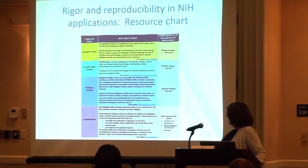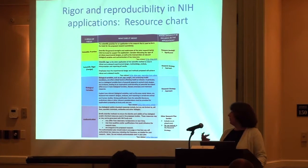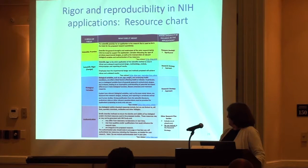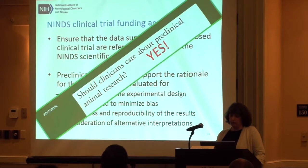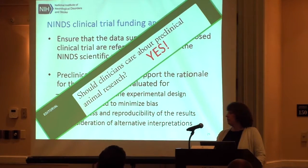There is a resource — searchable from the original link or by Googling 'reproducibility NIH' — that outlines different areas of focus, including the scientific premise, rigor, biological variables, and reproducibility and authentication, along with where within your application you should include those. As a clinician, should you care about pre-clinical animal research? Hopefully you now agree that yes, you need to — not only for the ability to be funded, but also to feel comfortable that your rationale for moving forward has a strong basis.